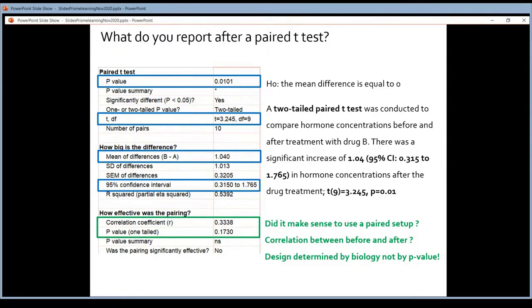The p-value tells you whether or not it made sense to use a paired setup. And how does he calculate that? Well, he calculates a correlation between before and after. So when you have a paired setup, the same patients in the two groups, you expect that there will be a correlation.